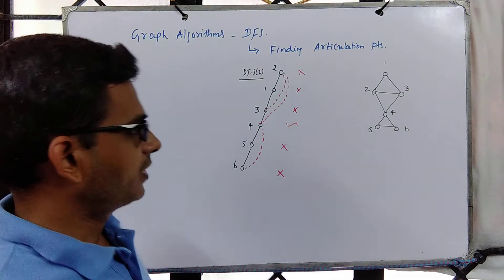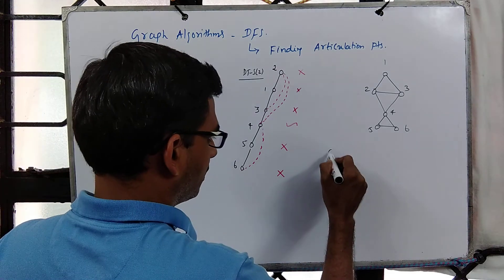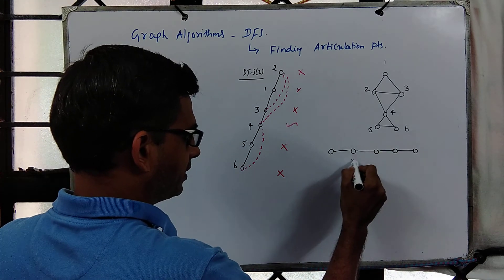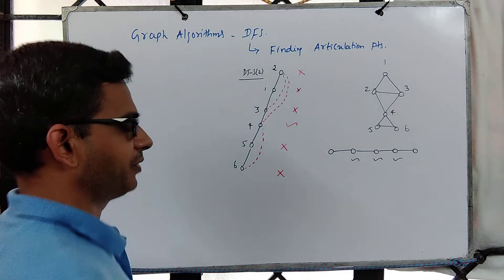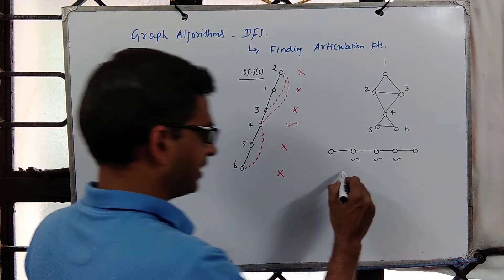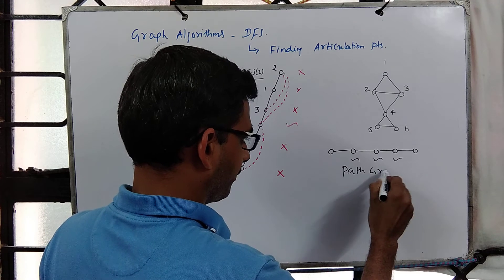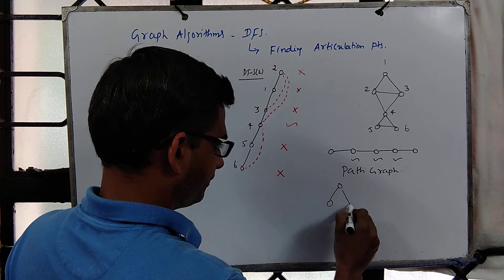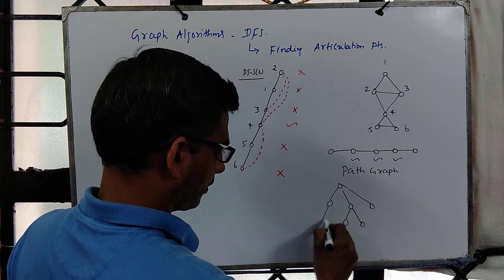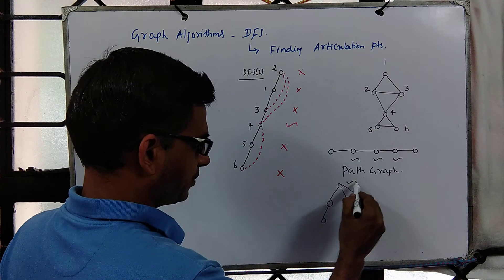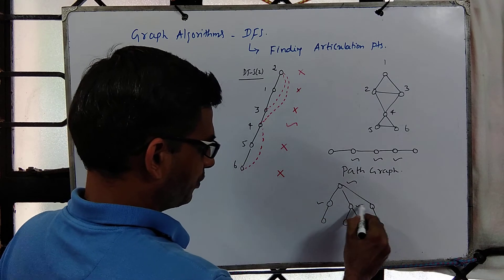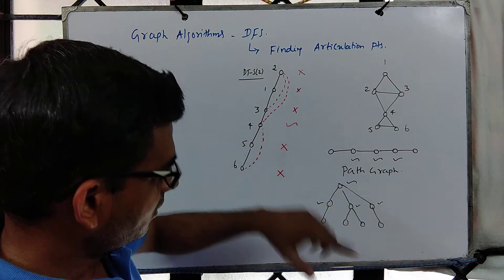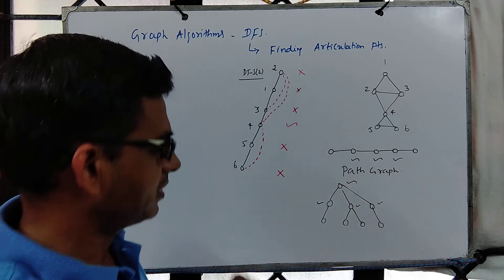Here is a graph which has exactly one articulation point. Suppose the graph itself is like a path — you can see that this vertex is an articulation point, this one is an articulation point, this one is an articulation point. This is a path graph. If you look at trees, some vertices are articulation points; if you remove one, the tree becomes disconnected, while others are not.